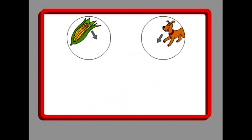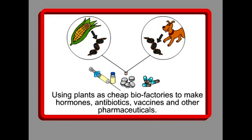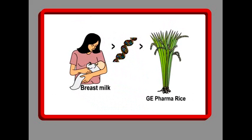Companies are also using plants as cheap biofactories to make hormones, antibiotics, vaccines, and other pharmaceuticals. Some trials are known to use animal genes — for example, dog genes. GE 'Ventria' rice has been modified with human genes to produce two proteins found in human breast milk. The plan is to use it to treat diarrhea. All these sound like good ideas, but you will see that they are really not.